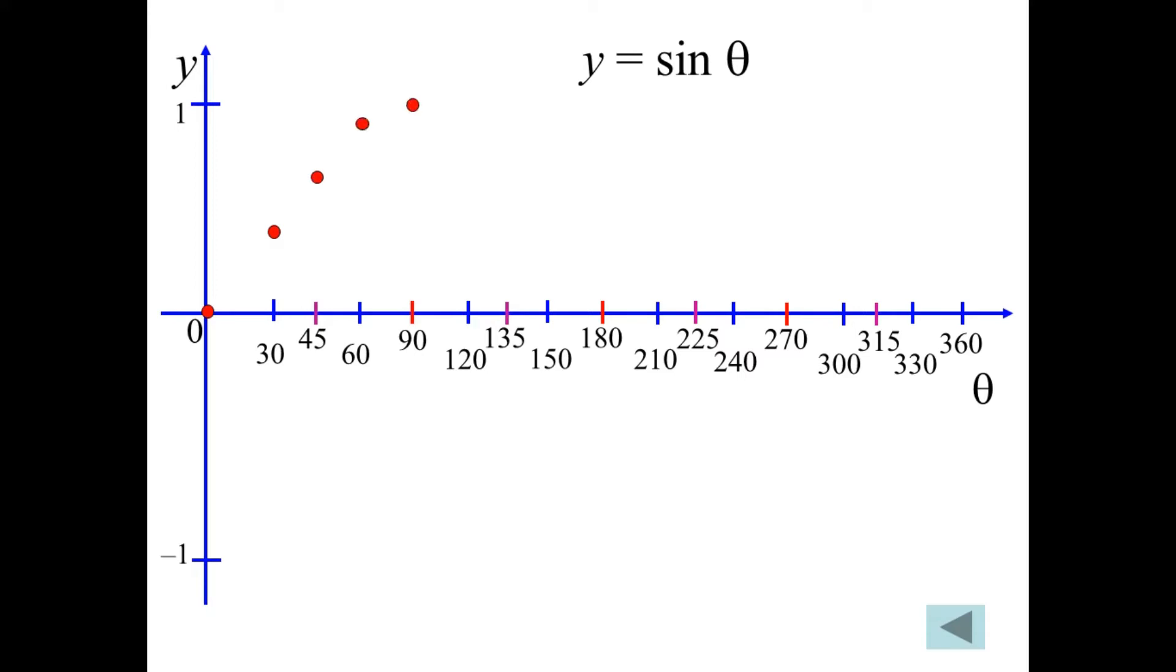And these would be the points that you would achieve if you did a table of values where y equals sine of theta, and theta was 120, 135, 150, 180, and so on. This is what the calculator would tell you. These are the points that you would get.